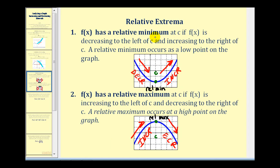Relative extrema occur where a function changes from increasing to decreasing or from decreasing to increasing. The function will have a relative minimum at x equals c if the function changes from decreasing to increasing. And the function will have a relative maximum at x equals c if the function changes from increasing to decreasing. So we have a relative minimum at a low point on the graph and a relative maximum at a high point on the graph.